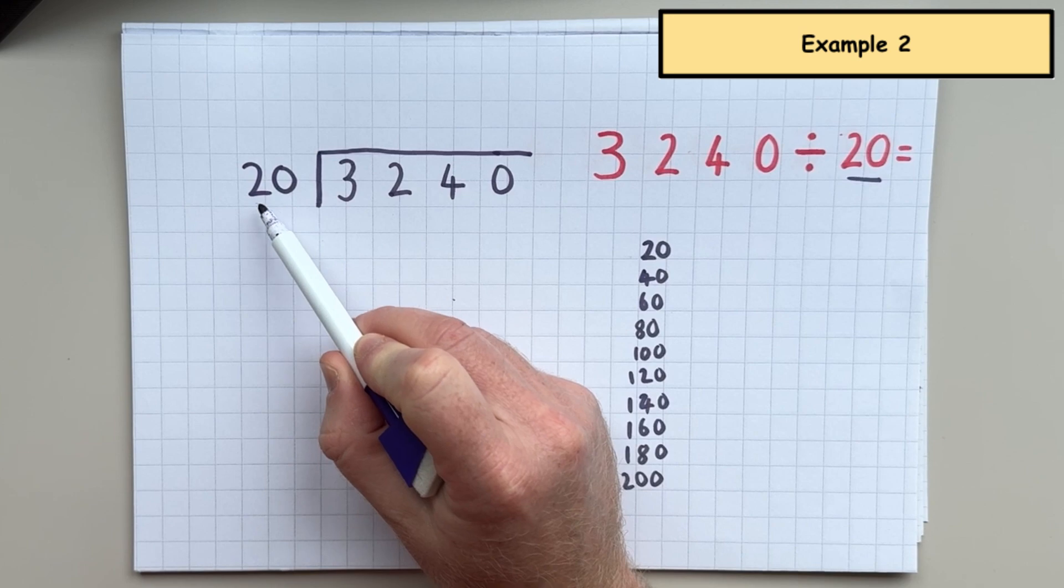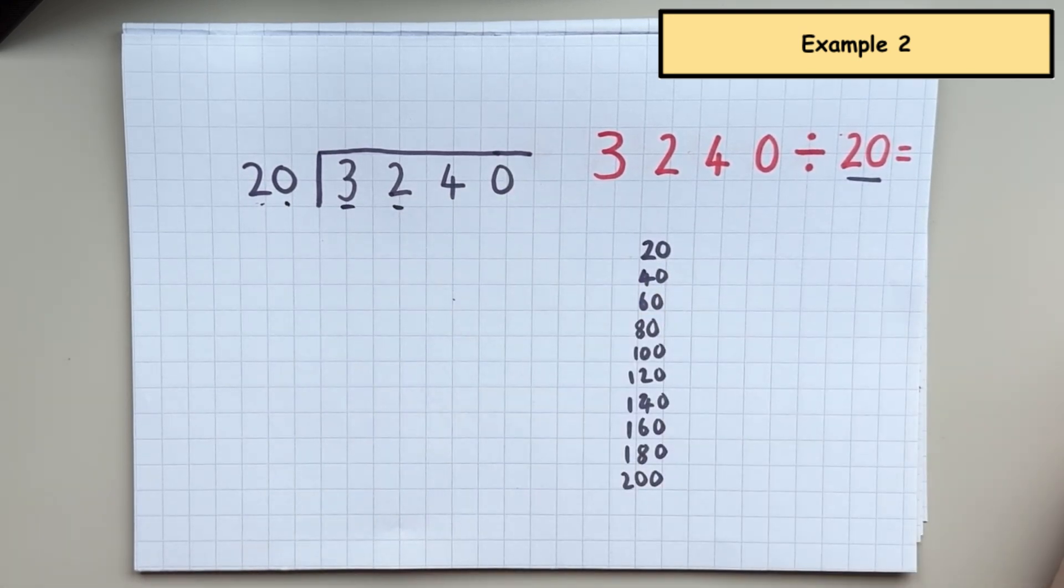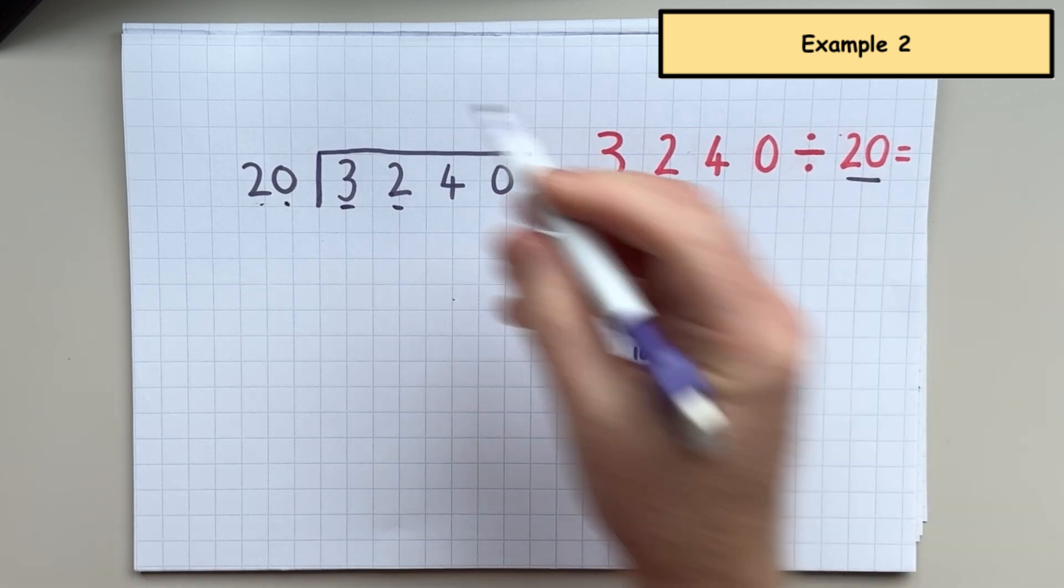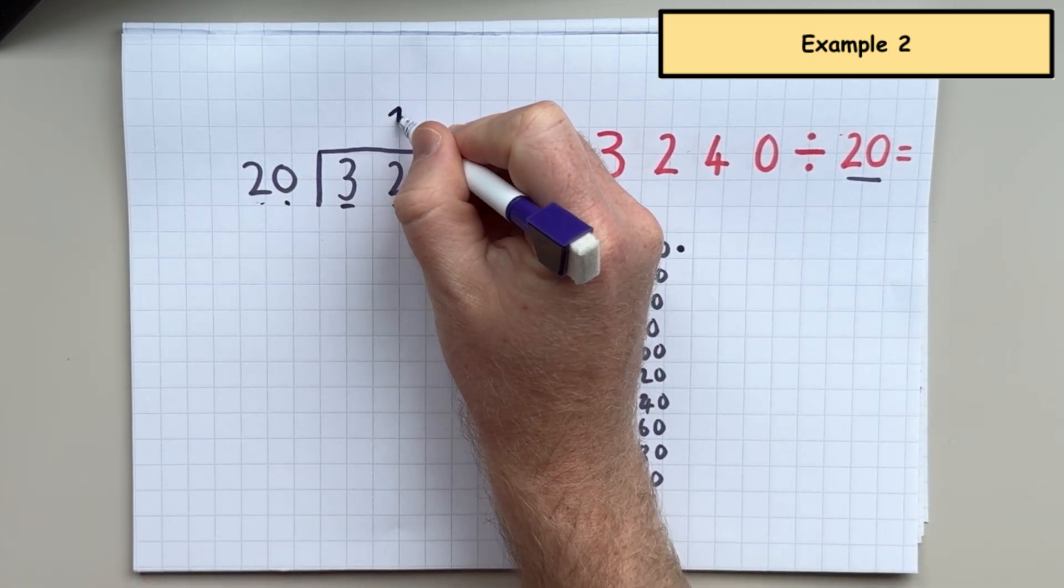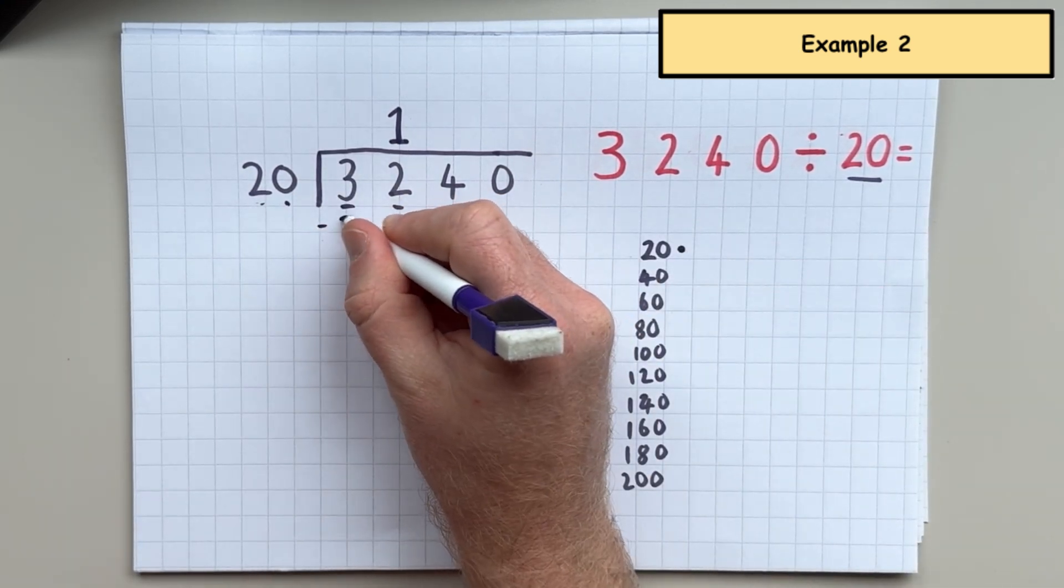And I'm going to ask myself, how many 20s are there in 32? And I can see that there is one 20 in 32. So there is one 20. And I've got to take away that one 20 here.